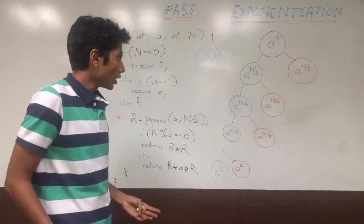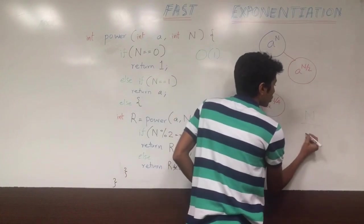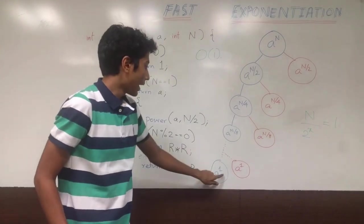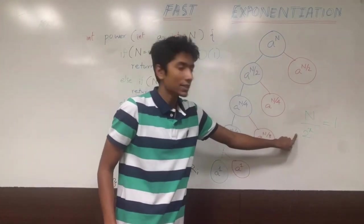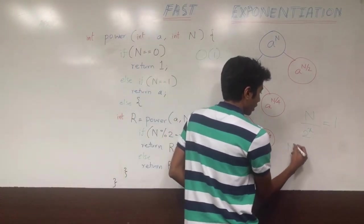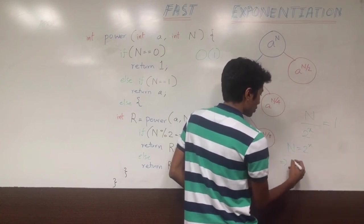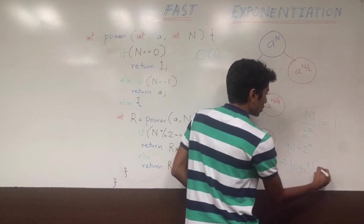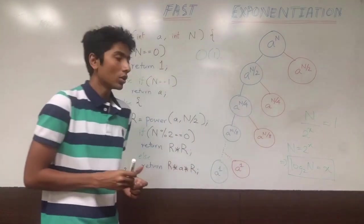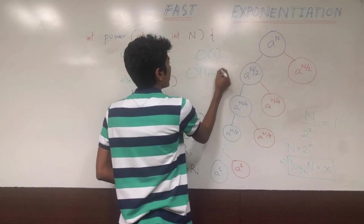So, up to the point that we have n by 2 raised to the power x equal to 1, we go on branching. At this point, n by 2 raised to the power x is equal to 1 for some integer x. So let's find out what x is. n is the first result we have. So we are doing order log n operations.